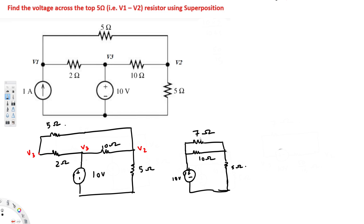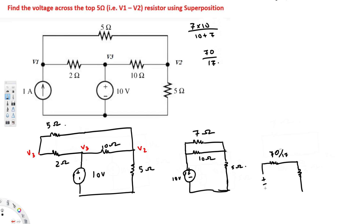We can see that the 10 ohm and 7 ohm resistors are in parallel. When resistors are in parallel, the equivalent resistance is found by multiplying them and dividing by their sum: (10 × 7) / (10 + 7) = 70/17 ohm. We redraw the circuit with this 70/17 ohm equivalent in series with the 5 ohm resistor and the 10V source.